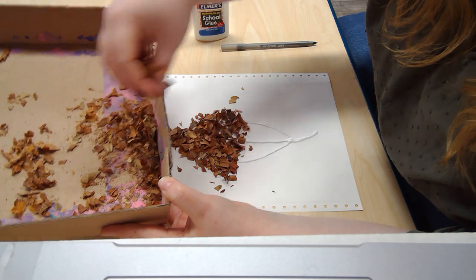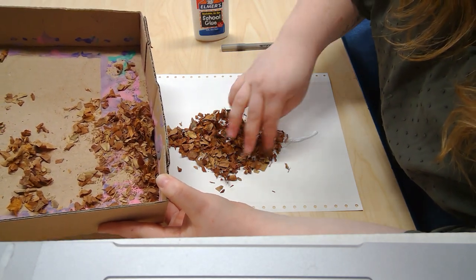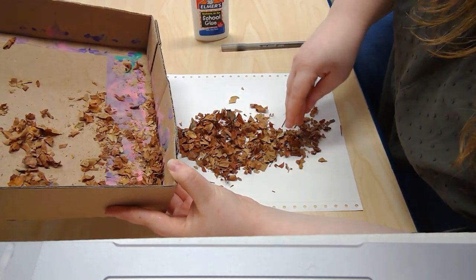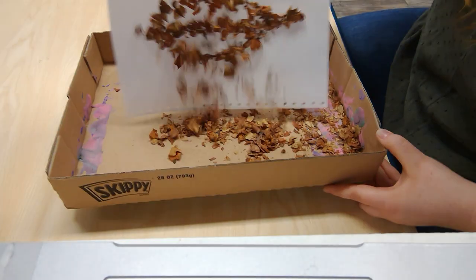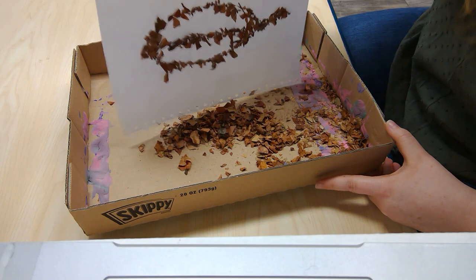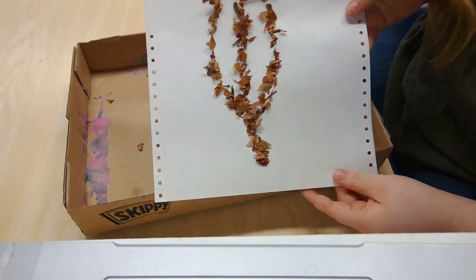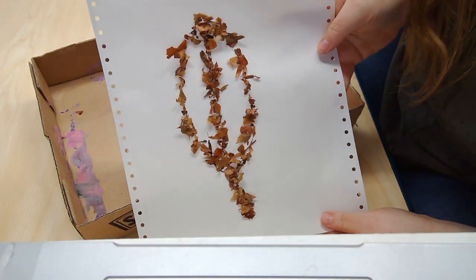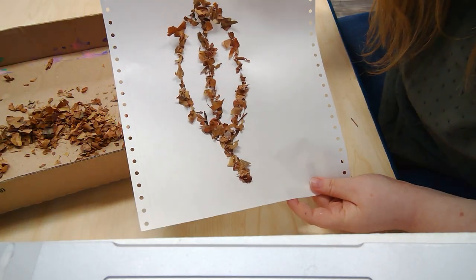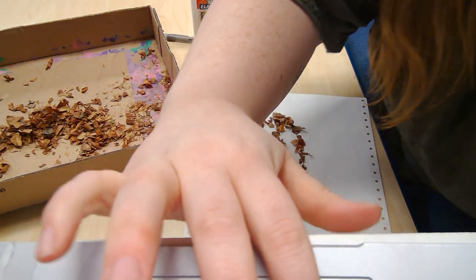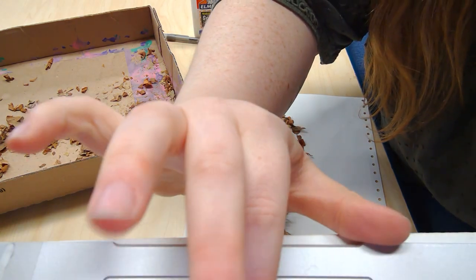And once I do this I'm going to cover up all the glue and then I'm going to shake, shake, shake, shake it back into the box. And as you can see, it makes our leaf picture using pieces of leaves from outside. Thanks friends, I'll see you next time!